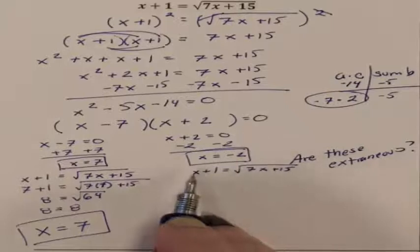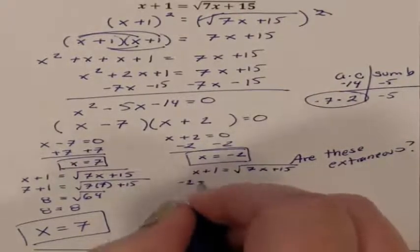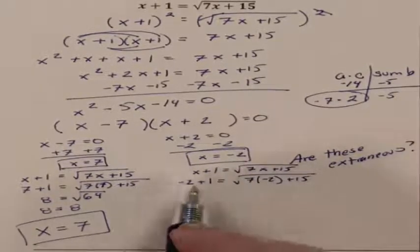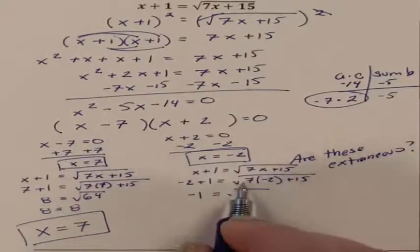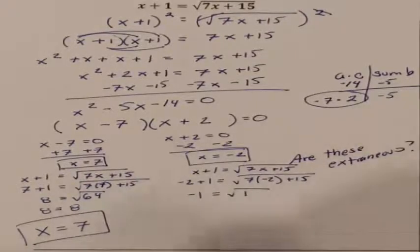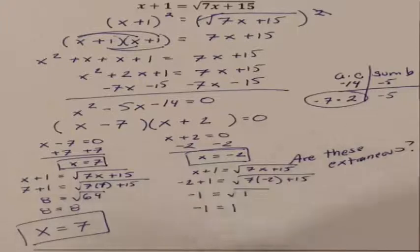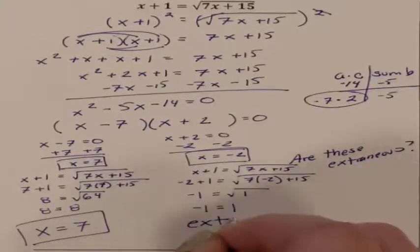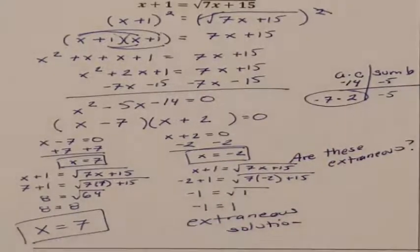Let's check this side. The x's are going to be replaced with negative 2's. So negative 2 plus 1 equals the square root of 7 times negative 2 plus 15. Negative 2 plus 1 is a negative 1. This is the square root of negative 14 plus 15 is 1. Negative 1 equals, what is the square root of 1? That is 1. Negative 1 does not equal 1. So this is an extraneous solution. So we only have one answer, and your answer is x equals 7.